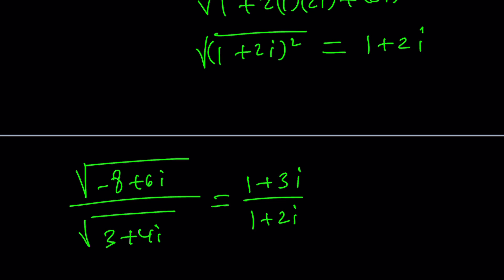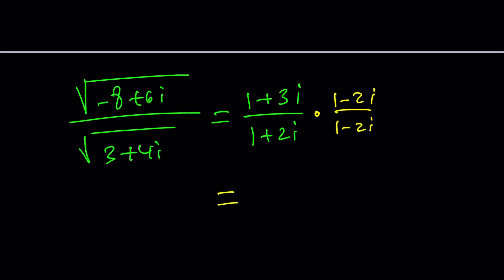Well, you could probably leave it like that or multiply by the conjugates. One minus two i. One minus two i. And this will give you, if you multiply one minus two i plus three i minus six i squared, which is plus six, divided by one squared plus two squared, which is five.